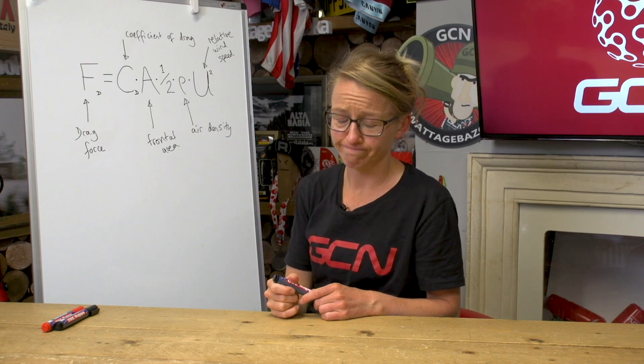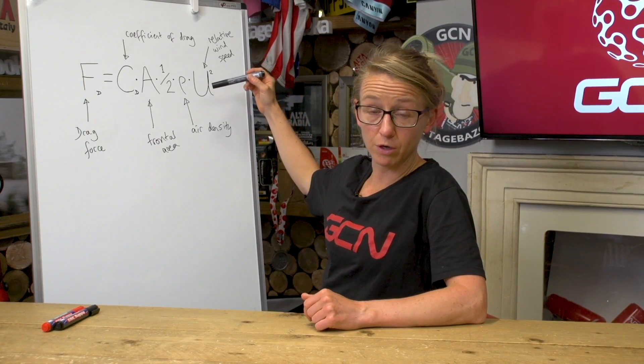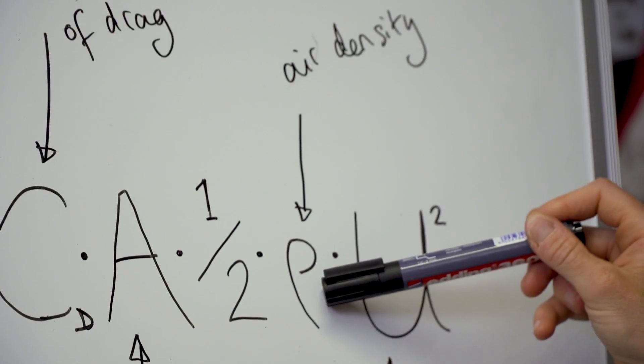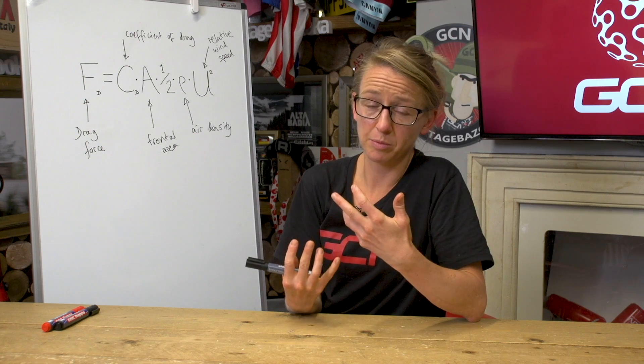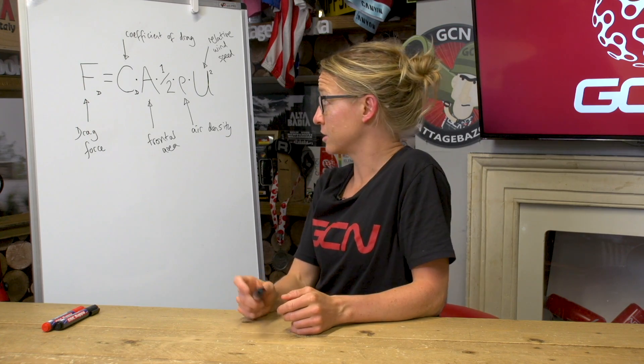Next in the equation we have rho (ρ), air density. Lower air density means lower drag, but it's hard to organise low air density on demand. Going to altitude where the air is less dense is a bit inconvenient for most of us, not to mention the effect that altitude has on your breathing and cardiovascular performance, which might mean you actually go slower despite having lower drag. That said, it's why many cycling hour records have been attempted at altitude.